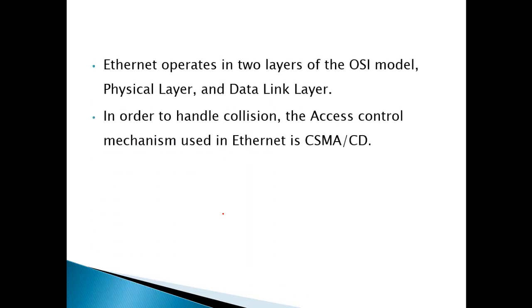Ethernet operates in two layers of the OSI model: the physical layer and the data link layer. So the implementation of Ethernet in the OSI model involves two layers — one is the physical layer and the other is the data link layer.